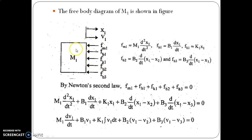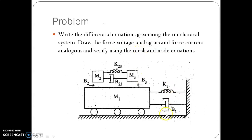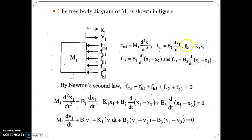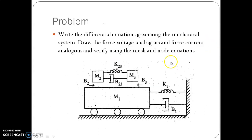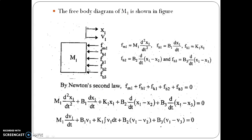Mark the displacement x1 and velocity v1. The expressions are: fm1 = m1·d²x1/dt², fb1 = b1·dx1/dt, fk1 = k1·x1, fb2 = b2·d/dt(x1 − x2), and fb3 = b3·d/dt(x1 − x3).